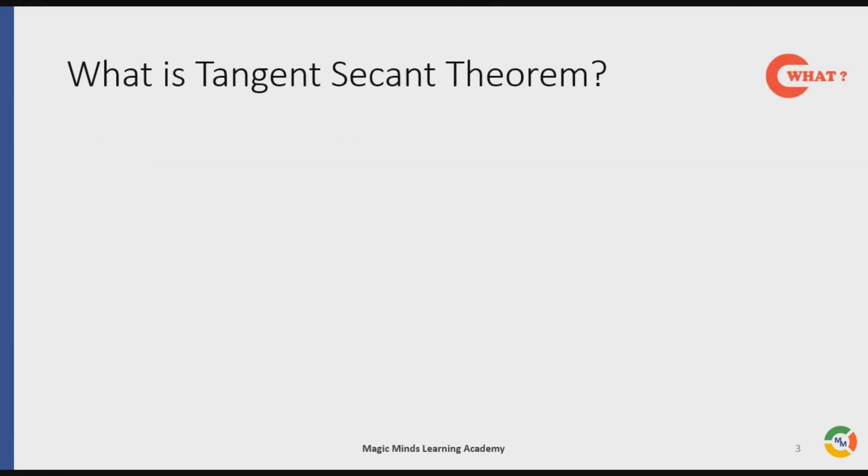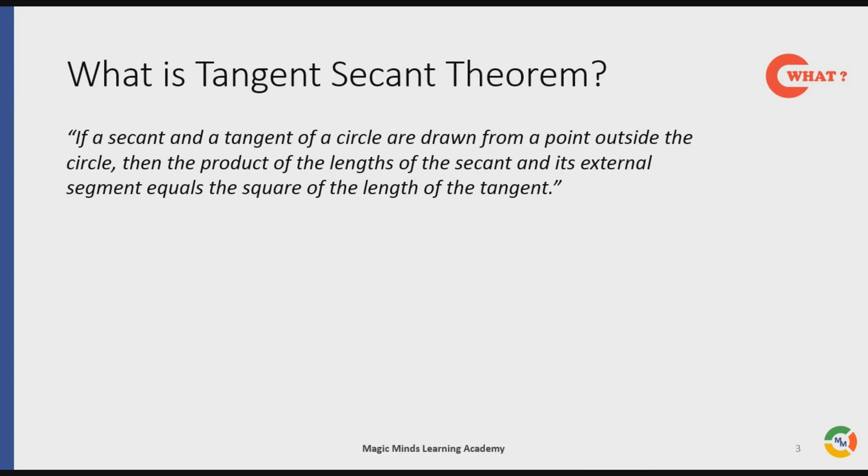What is Tangent Secant Theorem? It states that if a secant and a tangent of a circle are drawn from a point outside the circle, then the product of the length of the secant and its external segment equals the square of the length of the tangent. Key words to note: product, secant, external segment, square, and tangent.